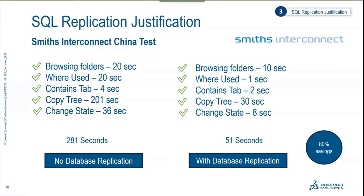What we found through these exercises: browsing folders was twice as fast; where-used went from 20 seconds down to 1 second; contains tab from 4 seconds to 2; the full copy tree operation went from about 201 seconds down to 30 seconds with replication; change state from 36 seconds to 8 seconds. With a bigger assembly — instead of 201 seconds it might have been hundreds of seconds, perhaps 6 to 10 minutes — the savings with replication essentially grow exponentially. Even where there's no database replication, you might see greater than 80% savings, and that percentage may even increase with larger assemblies.